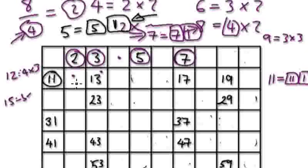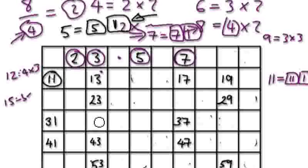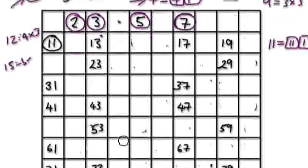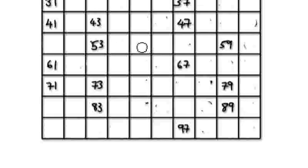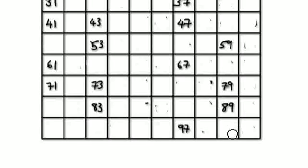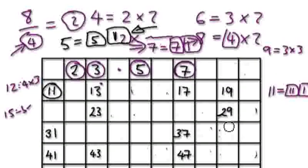So for 11 — counting every 11 steps to mark off multiples. It's basically the diagonals. Counting 10, 11 — 10, 11 — 10, 11 — 10, 11. So we've covered up all the multiples of 11 now.